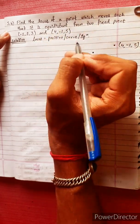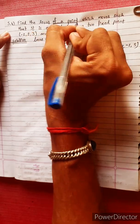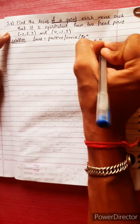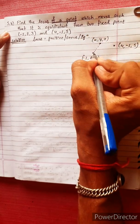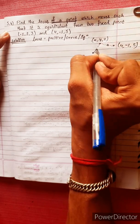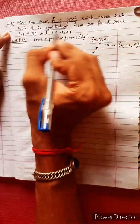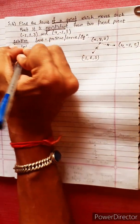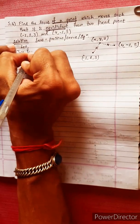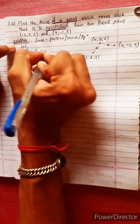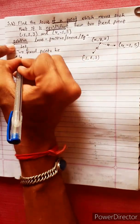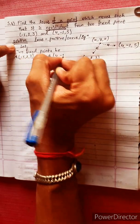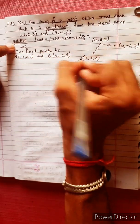Locus of a point which moves such that it is equidistant from two fixed points. Let the two fixed points be A(-1, 2, 3) and B(4, -1, 5). Suppose we have a moving point with coordinates (x, y, z). If the two distances are equal — that is equidistant — this point is the locus point.